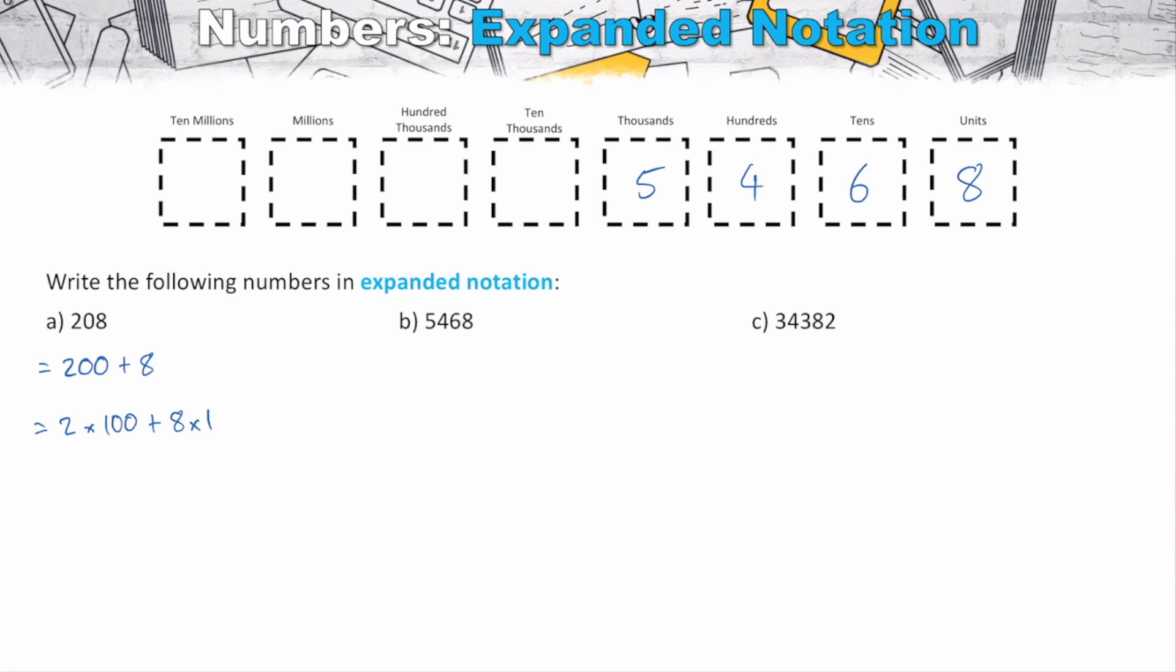So we've got five thousands, which is going to be 5,000, plus 400, plus 60, plus 8. And we've now broken it down into the sum of its parts, which essentially is what expanded notation is.